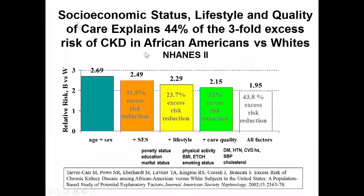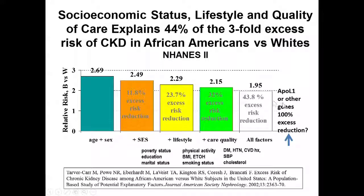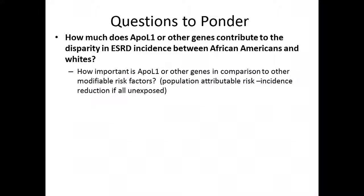Going back to the risk attribution model: if you look at care quality as measured by controlled diabetes, hypertension, cardiovascular history, and cholesterol, you can explain about 33 percent of the excess risk reduction. Putting all factors together, we could explain over half of the excess risk. But there's still a considerable amount of risk remaining. Maybe that's APOL1 or other genes — could we have explained 100 percent if we'd had APOL1 data back then?